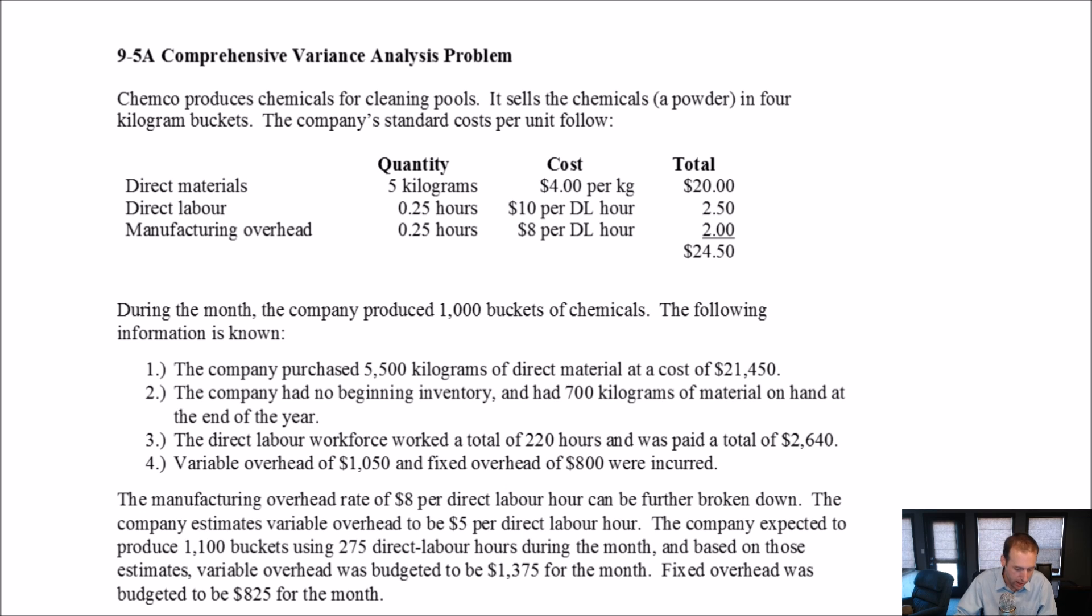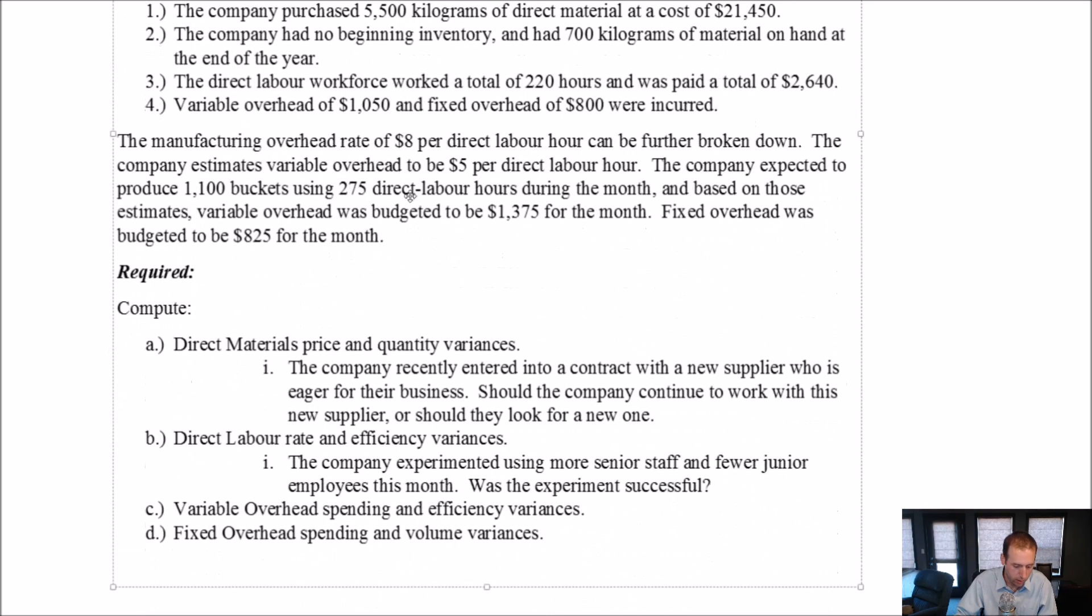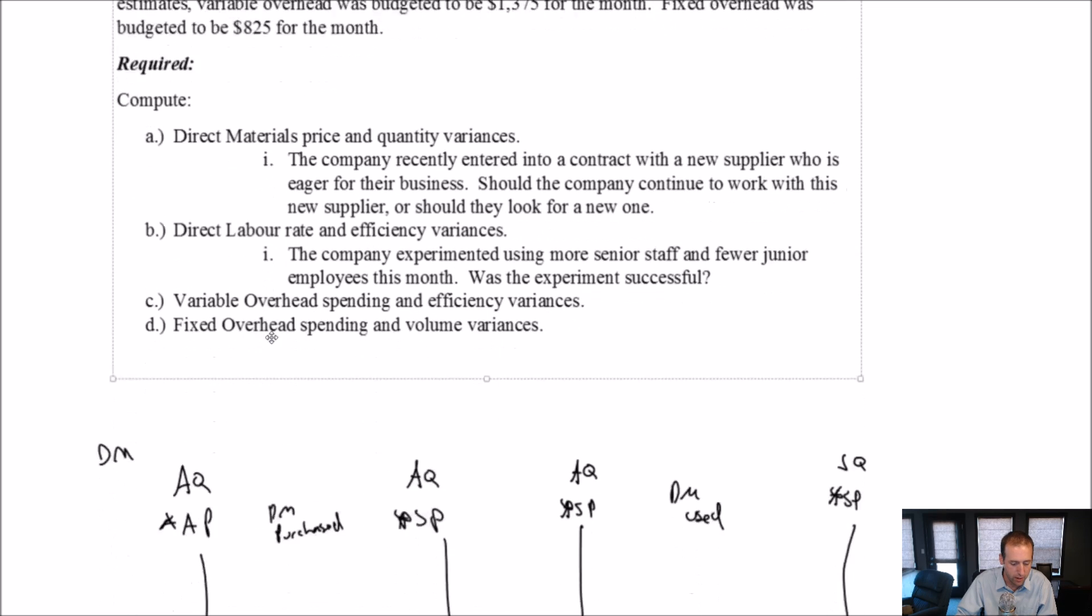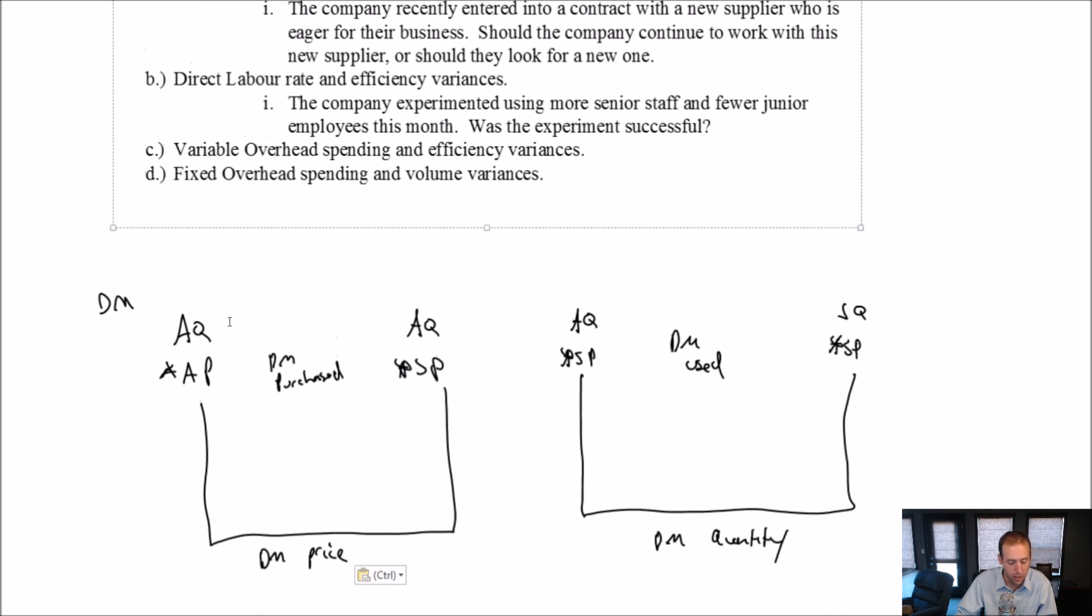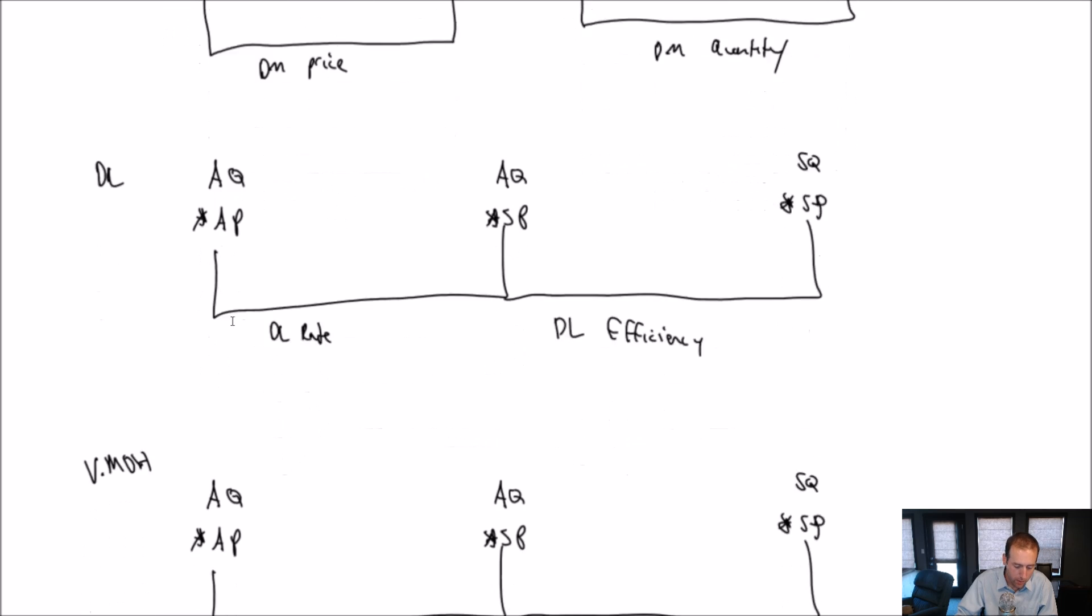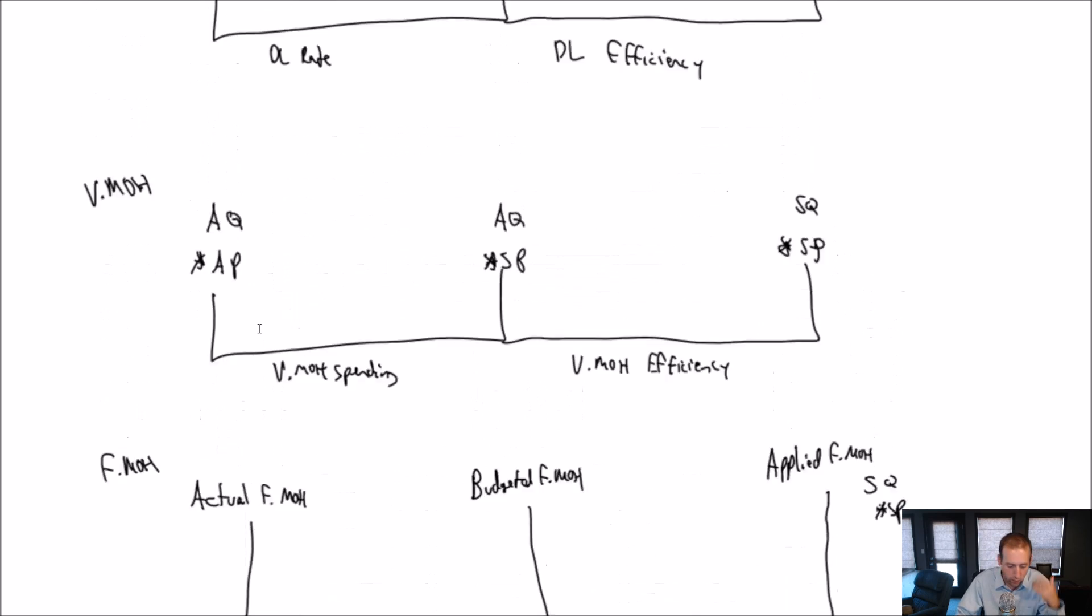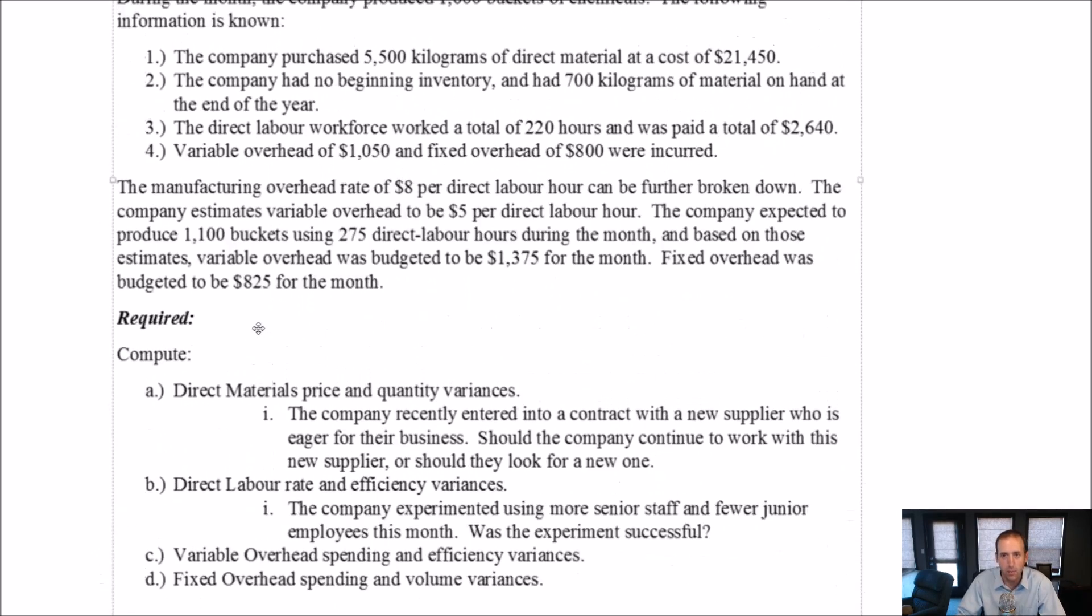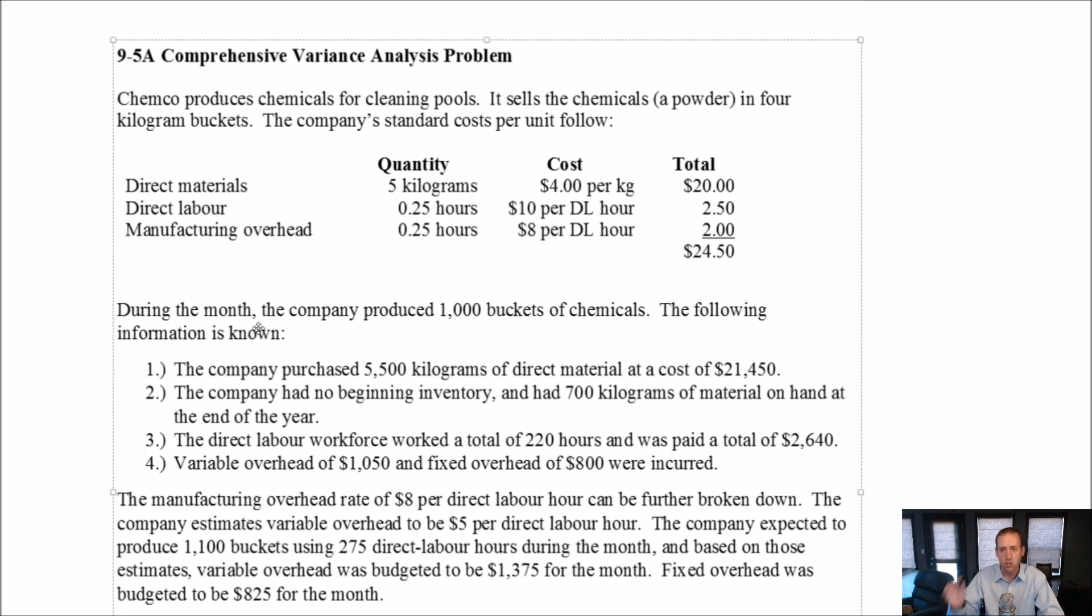So kind of scanning ahead, I kind of read the required. I said okay, we're going to have to do direct materials price and quantity variances. And I laid the charts out. So I said okay, here's materials, labor, variable overhead and fixed overhead. So I've laid out my charts already just to sort of speed up the problem. And as we go through it, I'm going to start filling in the information that I can in each area.